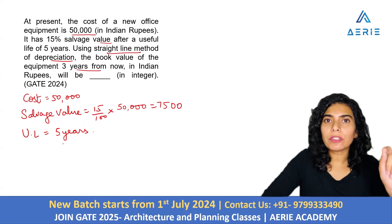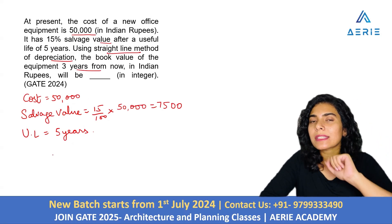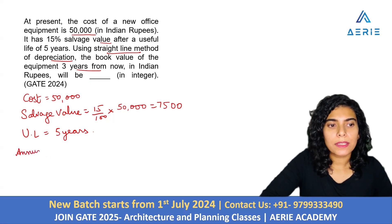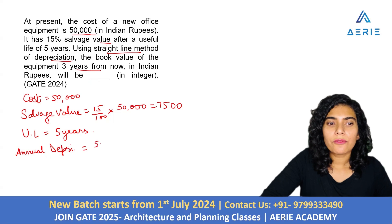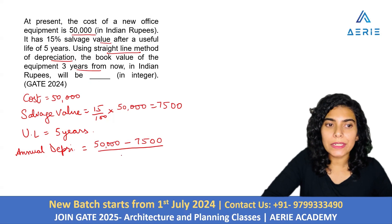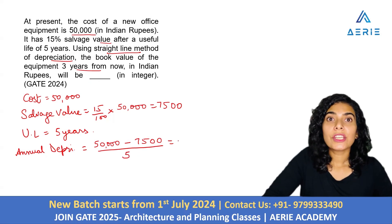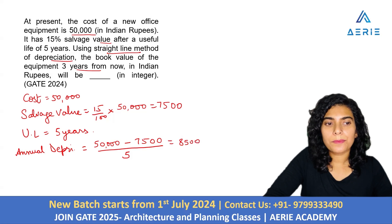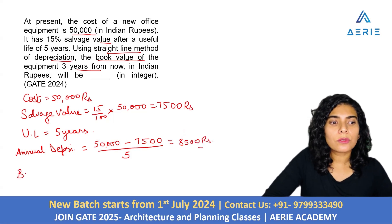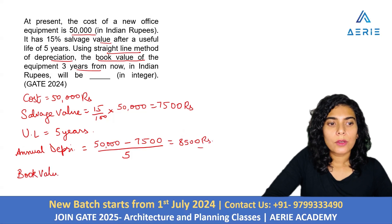The cost is 50,000 and the salvage value is 7,500. So the annual depreciation is calculated as 50,000 minus salvage value 7,500, divided by the useful life of 5 years. The value comes out to 8,500 rupees — this is the annual depreciation.